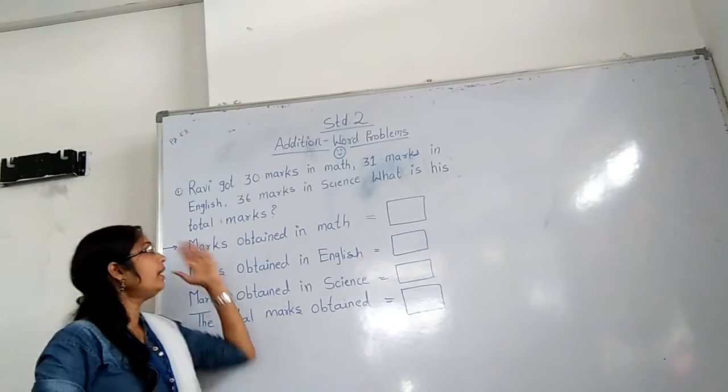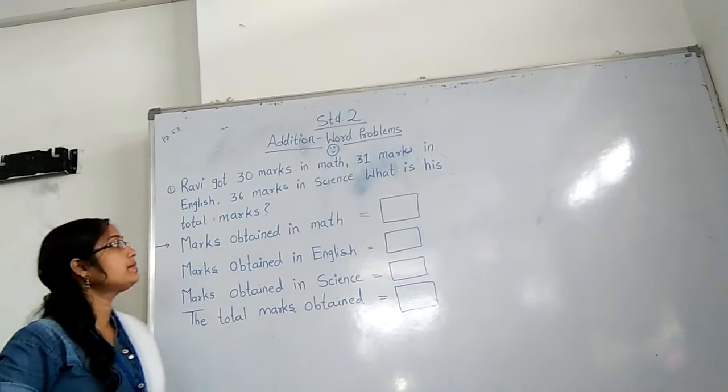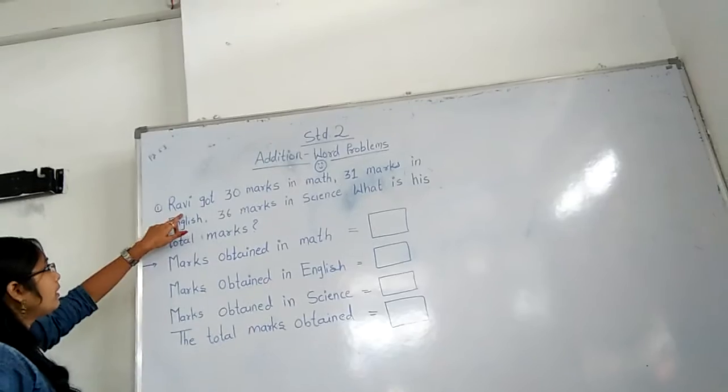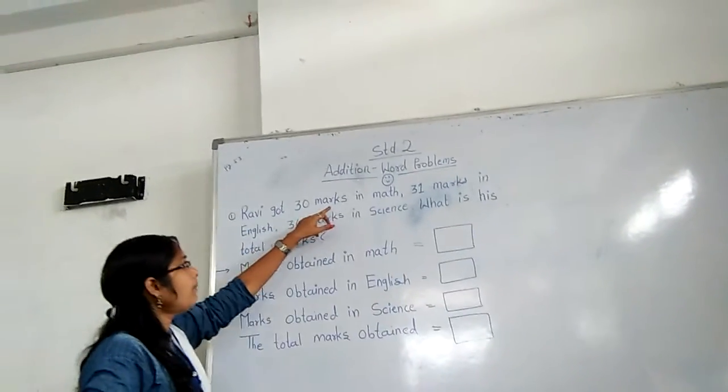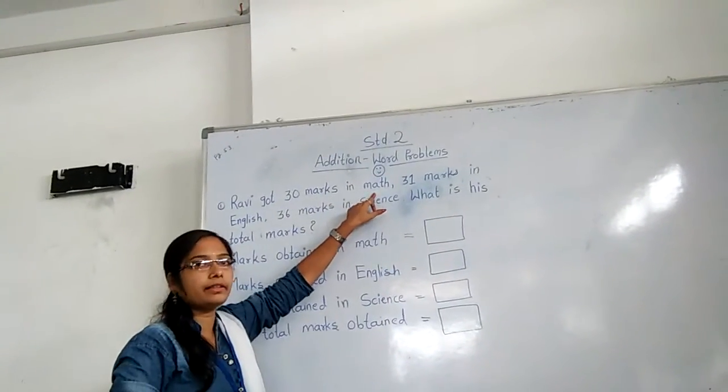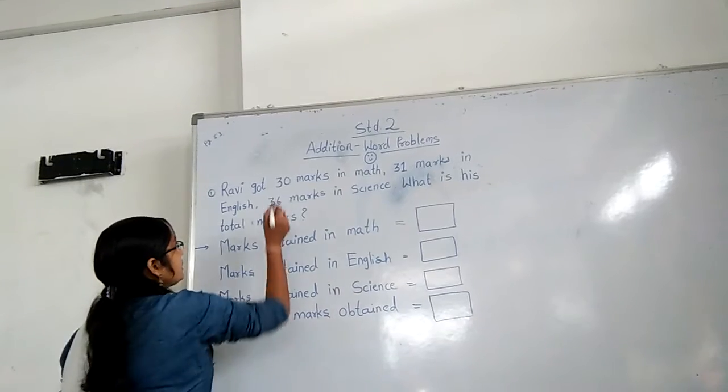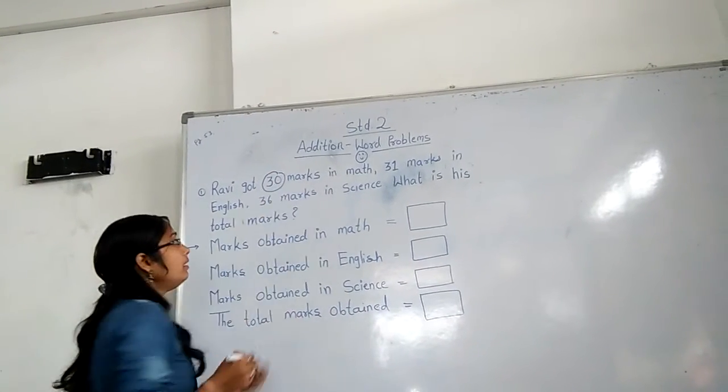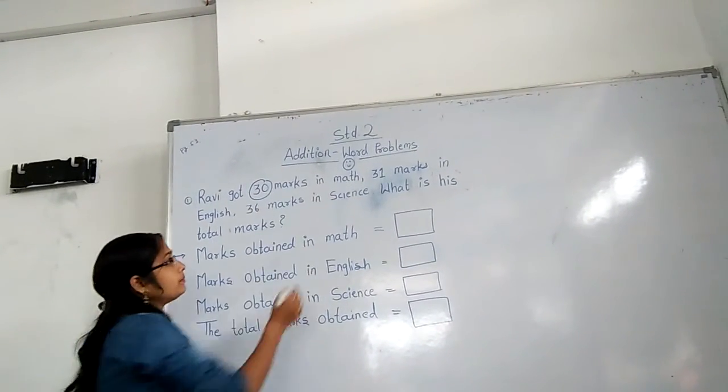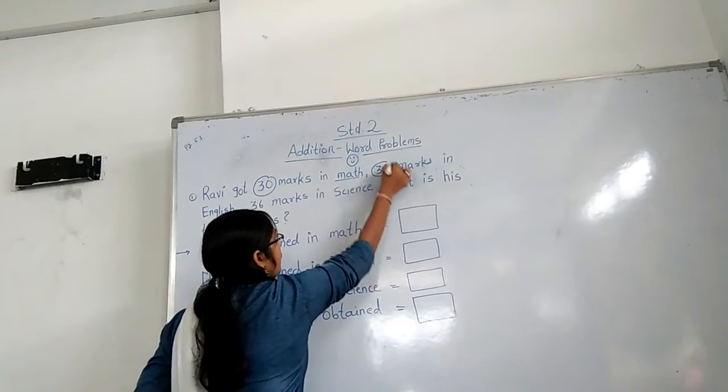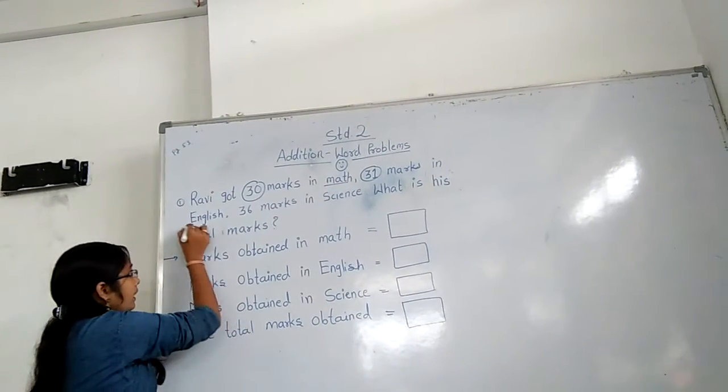Okay, here I write one word problem. Listen. Ravi got 30 marks in math. Ravi got how many marks? 30 marks in math. Okay, and 31 marks in English.